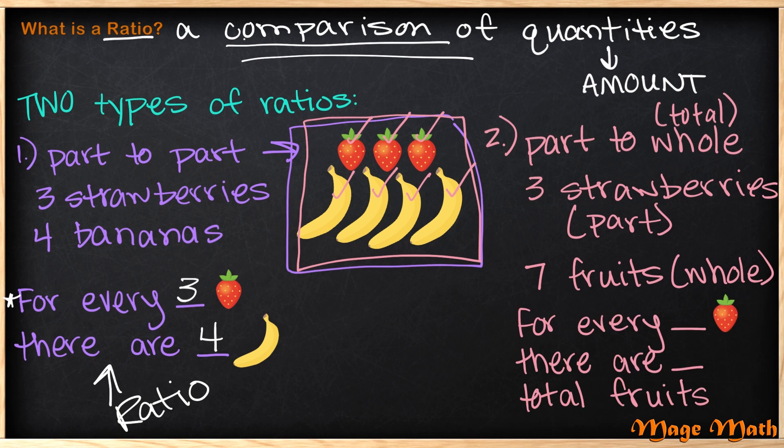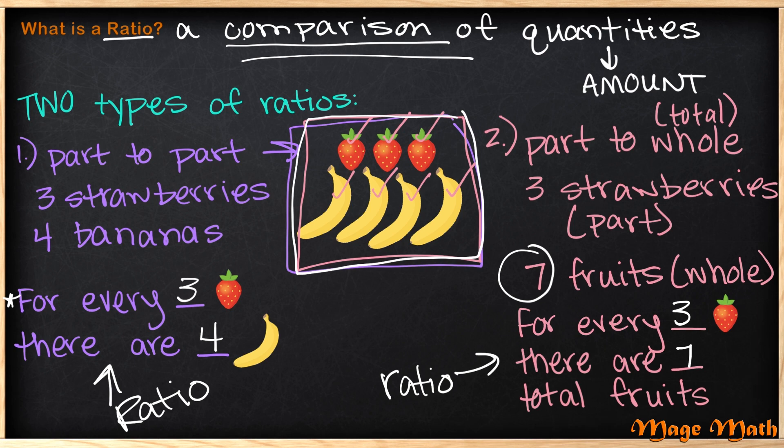So if we wanted to write a sentence for comparing a part to whole, we would say for every blank strawberries, how many strawberries do we have? Three. So for every three strawberries, there are blank total fruits. And we said that our total is seven total fruits because there are three strawberries and four bananas. And if we count them all together, the total is seven. Again, this is another type of ratio or comparison of quantities. On the next slide, we're going to look at how we should write our ratios.